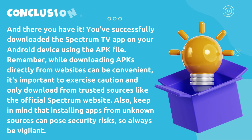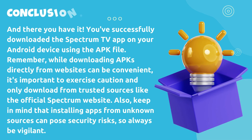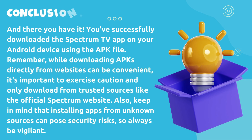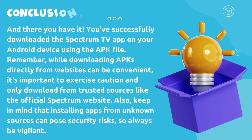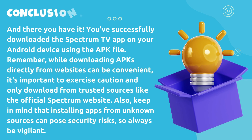And there you have it. You've successfully downloaded the Spectrum TV app on your Android device using the APK file. Remember, while downloading APKs directly from websites can be convenient, it's important to exercise caution and only download from trusted sources like the official Spectrum website. Also, keep in mind that installing apps from unknown sources can pose security risks, so always be vigilant.